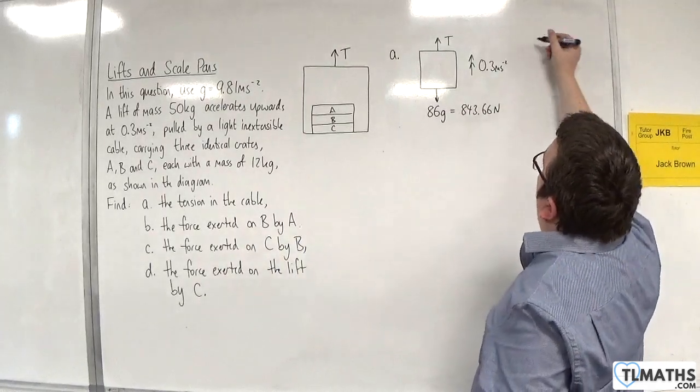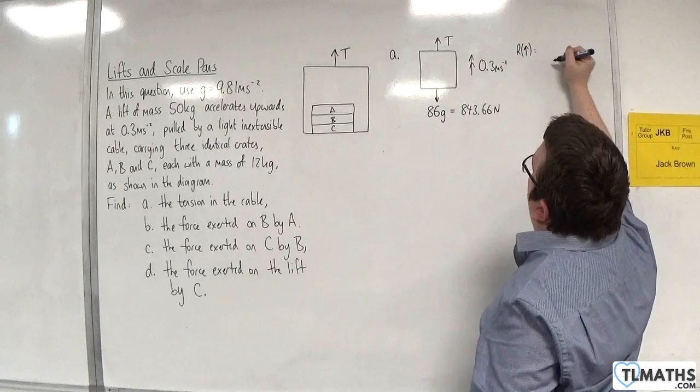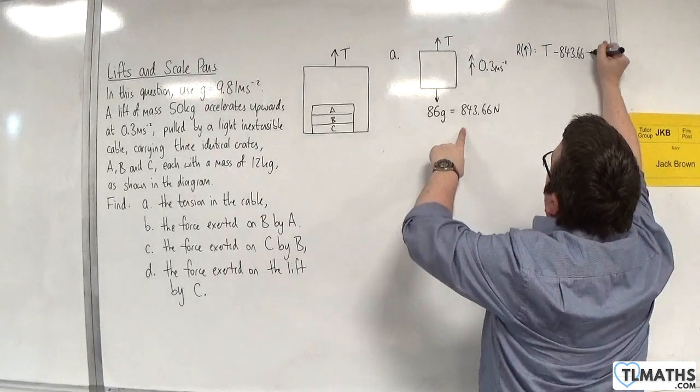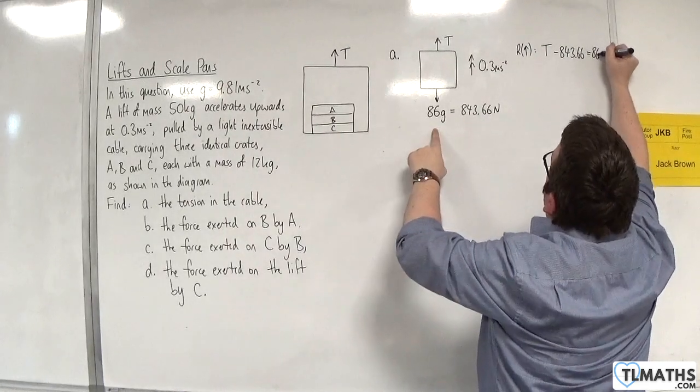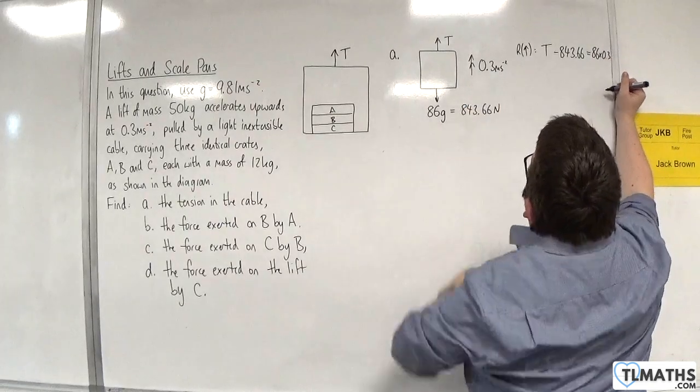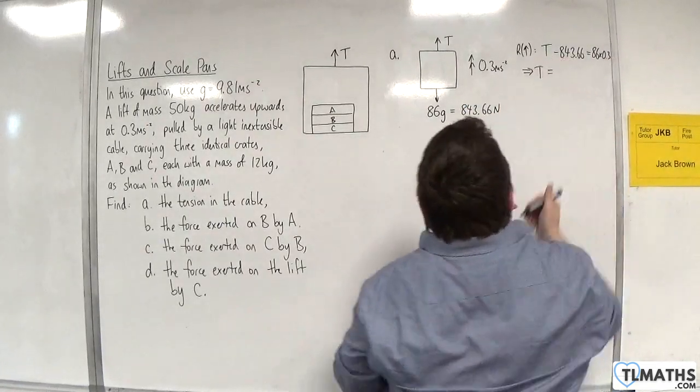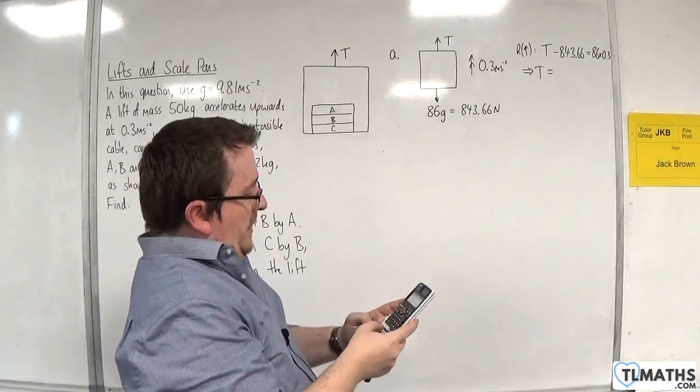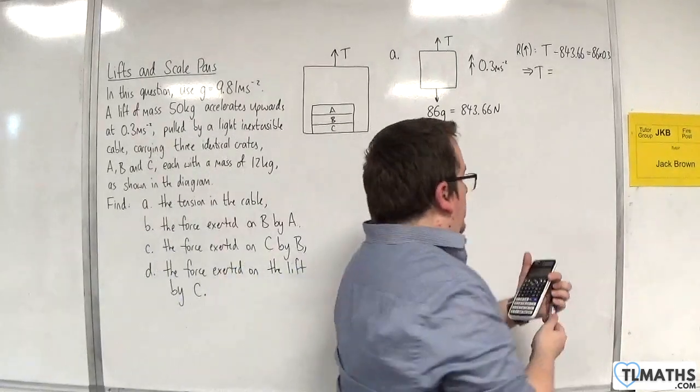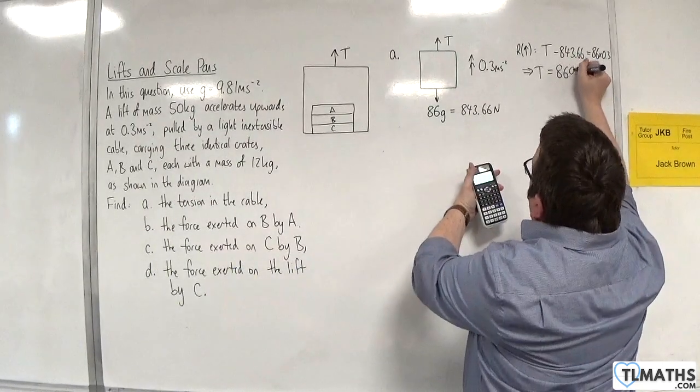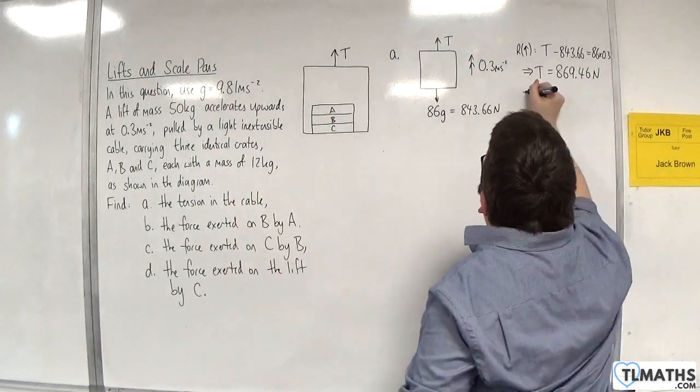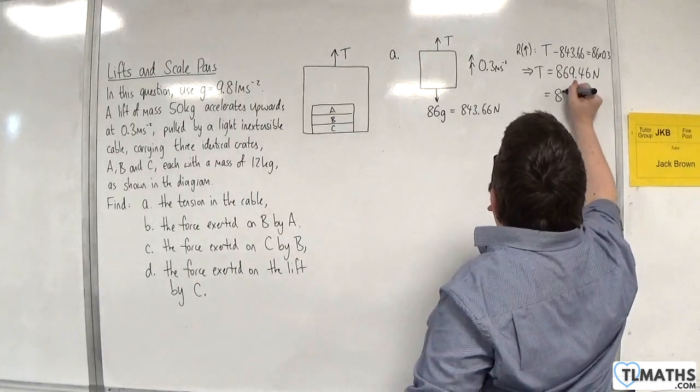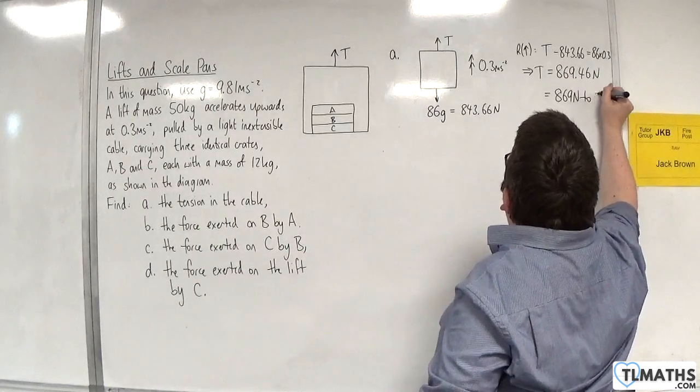So if we resolve upwards, taking upwards as positive, we've got the tension take away 843.66 is going to be equal to the mass, 86, times by the acceleration, 0.3, using Newton's second law. So we've got 86 times 0.3 plus 843.66. So we get 869.46 newtons. And because we are working with 9.81, we should round that to three significant figures: 869 newtons to 3 sig fig.